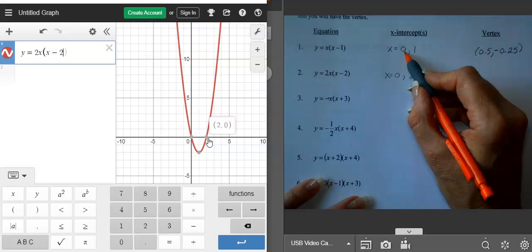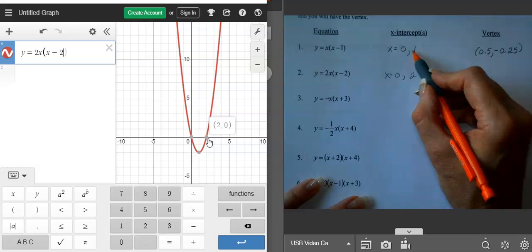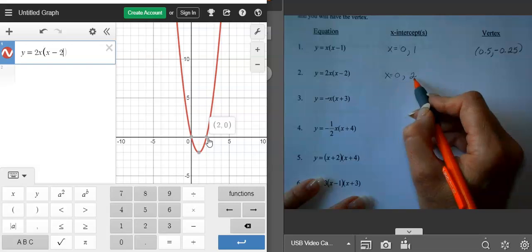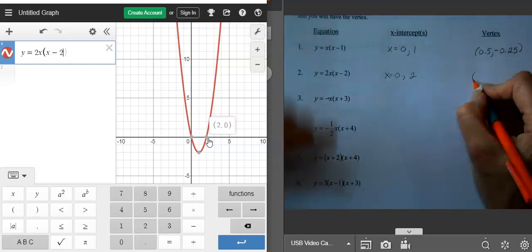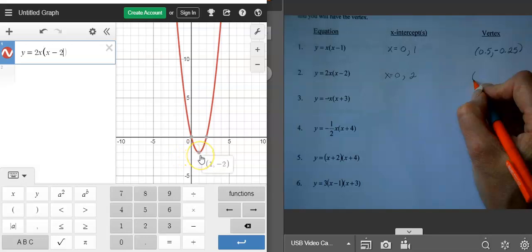If you wanted to write it as a point, it would be 0, 0, and then 2, 0. My vertex for this then, if I scroll over it, is 1, negative 2.